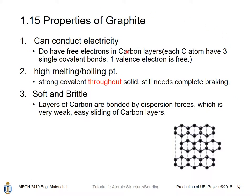Graphite is quite special. It can conduct electricity because each carbon atom in a single layer is bonded to three other carbons, leaving one delocalized electron. It has high melting and boiling points due to strong covalent bonds within the layers. However, it is soft and brittle because the layers are bound only by very weak dispersion forces, which allow easy sliding of carbon layers.